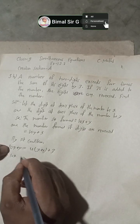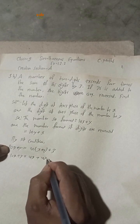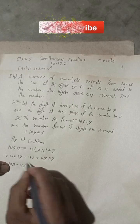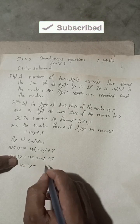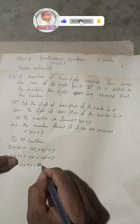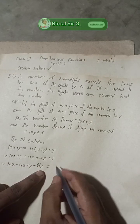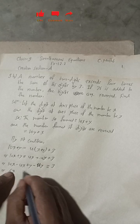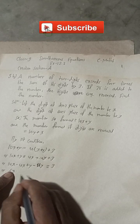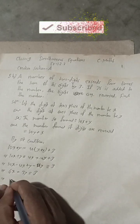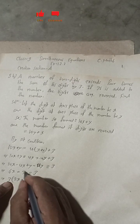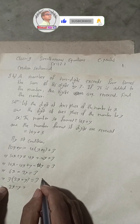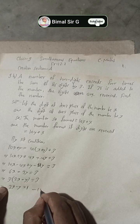Solving: 10x + y = 4x + 4y + 3. Bringing terms across: 10x - 4x + y - 4y = 3, giving 6x - 3y = 3. Taking 3 as common: 3(2x - y) = 3, so dividing both sides by 3 gives us Equation 1: 2x - y = 1.